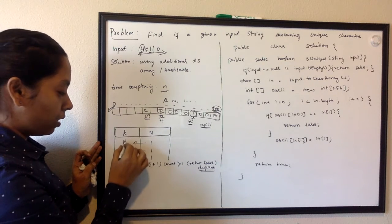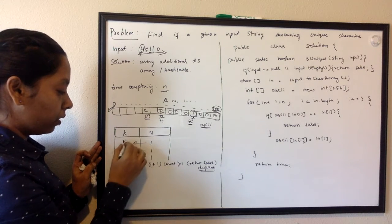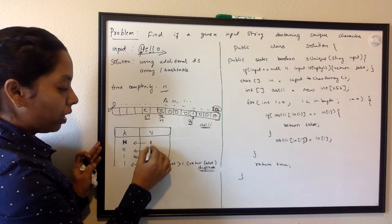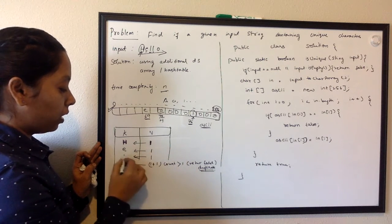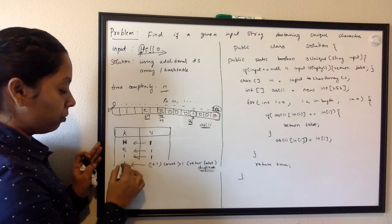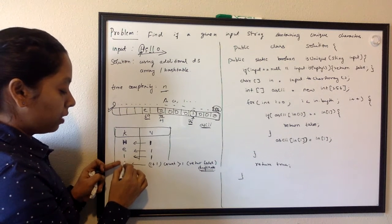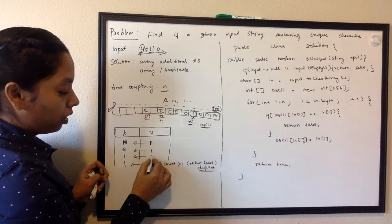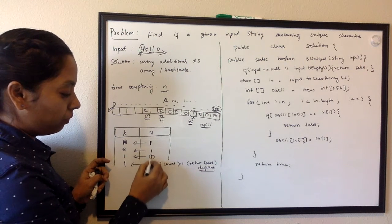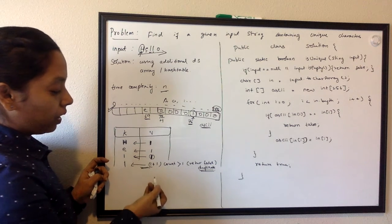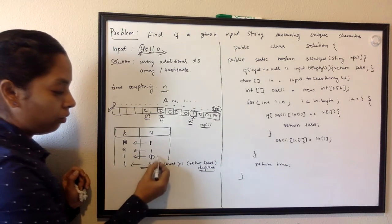We can also do it with help of a hash map. How we are going to do hash map is: as you get the elements, input H and have a counter as one, input E with counter as one, and L as one.